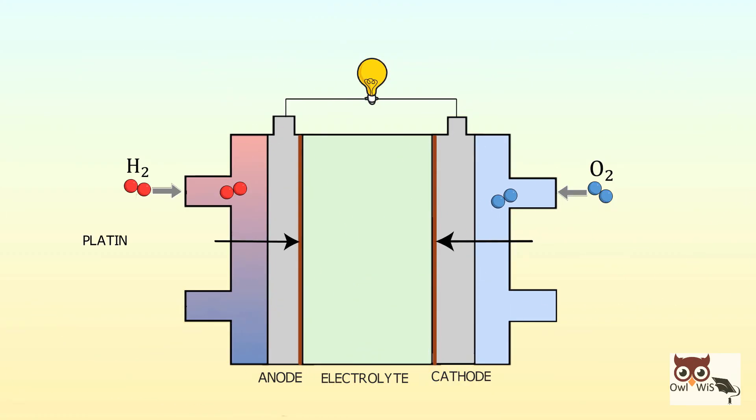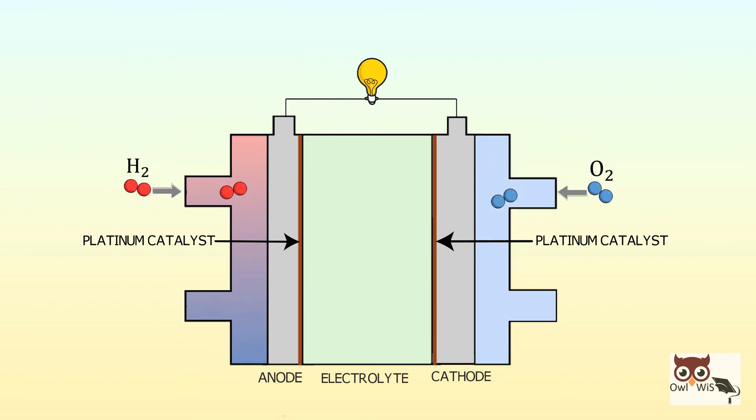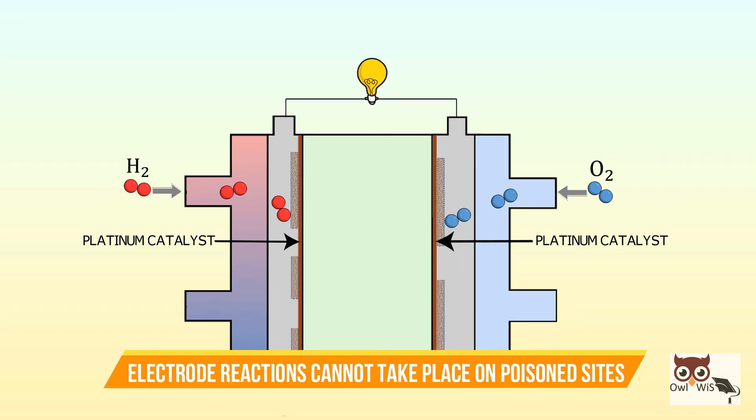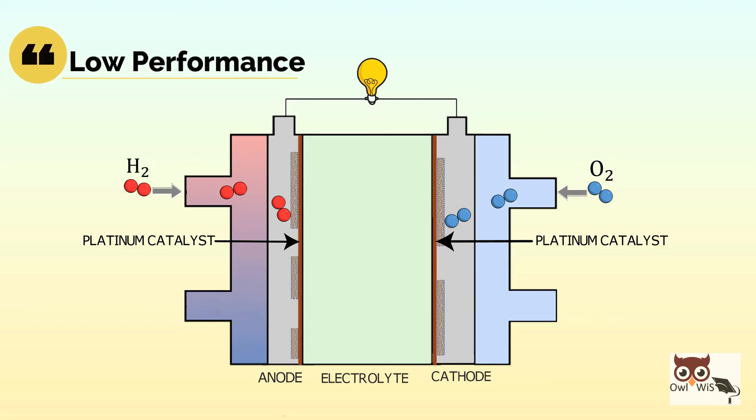Also, the platinum catalyst on the membrane is easily poisoned by carbon monoxide. The poisons bind strongly to the catalyst and prevent hydrogen or oxygen from reaching it. The electrode reactions cannot take place on the poison site and the fuel cell performance is diminished.